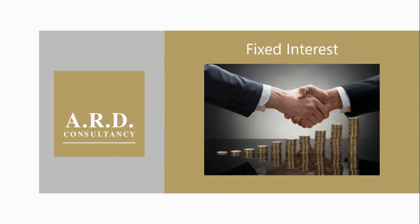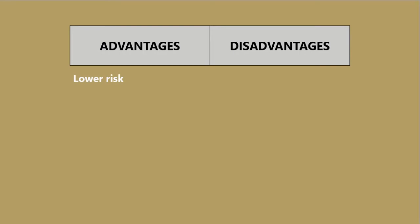Advantages and disadvantages to consider: fixed interest is one of the lower risk asset classes, though that does not mean there's no risk. There's a greater potential return than cash — companies looking to raise finance will offer a better rate of return than what's available on cash accounts to make it attractive. So if you're lending money to a company, you'd expect to receive more than you could from a bank or building society. On liquidity, it's relatively easily tradable and there is quite a good market. We're also not limited to the UK — we will look at options for lending money to companies overseas for slightly better returns.